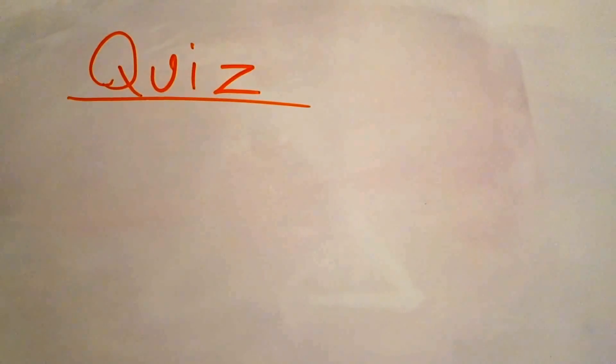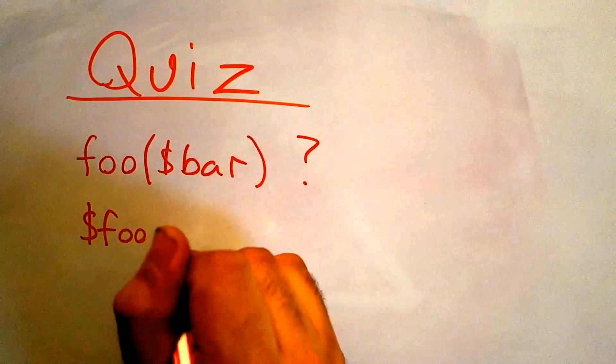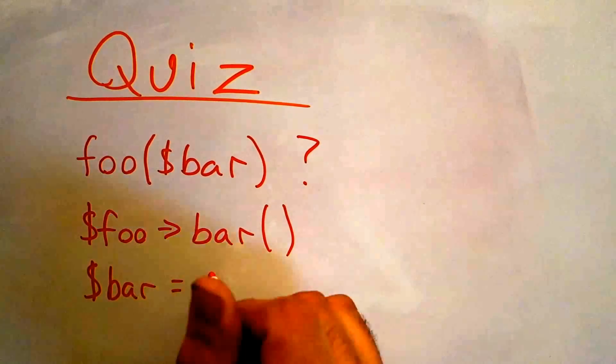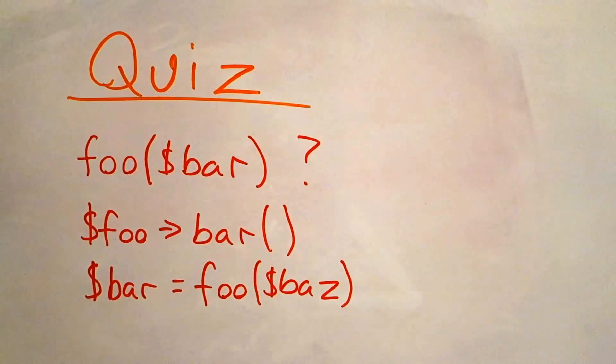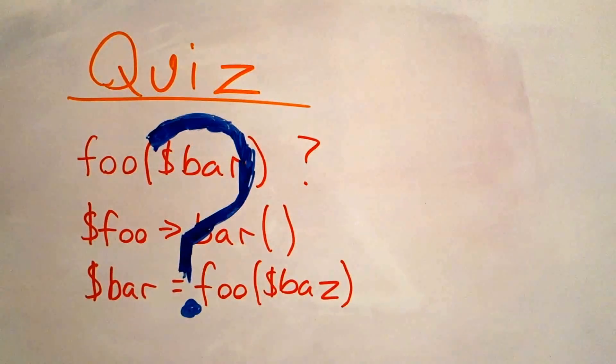So here's a quick quiz. What paradigm does this line of code use? How about this one? And what about this one? The answer is that we simply can't tell. One line is not enough to understand what's going on.